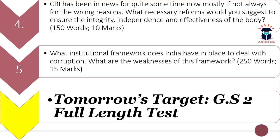Your fifth question is: what institutional framework does India have in place to deal with corruption? What are the weaknesses of this framework? So you have to highlight what institutional framework exists to deal with corruption and also highlight the weaknesses present in this framework. The word limit is 250 and the maximum marks are 15.